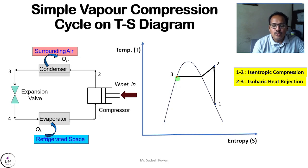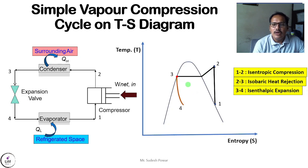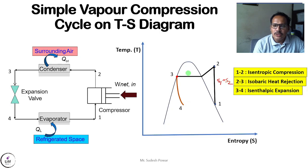The refrigerant then goes to the expansion valve where isenthalpic expansion occurs. Since isenthalpic expansion is an irreversible process, it is shown by a dotted or differently colored line on the TS diagram. In process 1 to 2 entropy is constant, in process 2 to 3 pressure is constant so P2 equals P3, and in process 3 to 4 enthalpy is constant.